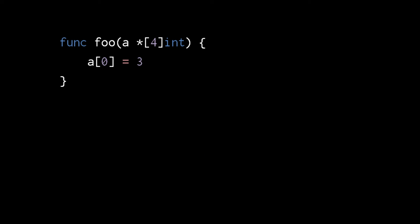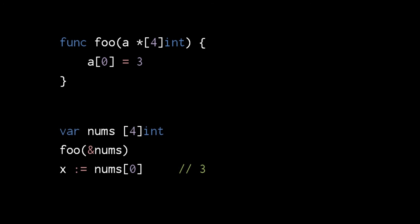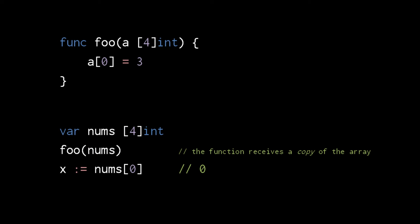Be clear that we can make pointers to any kind of data type, including arrays, slices, and maps. Here, for example, our function foo receives a pointer to an array of 4 ints. When we pass to the function a pointer to the array nums, the function assigns 3 to the first element. Again, if instead the function received an actual array instead of a pointer to an array, the function would modify only its own copy.